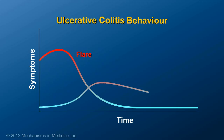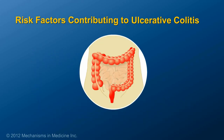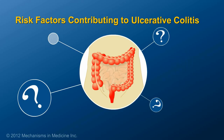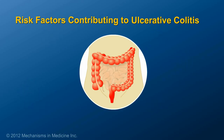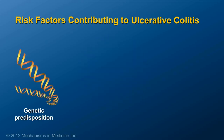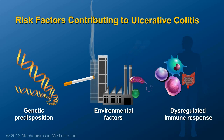Some patients with ulcerative colitis have more severe flares than others. Although the cause of ulcerative colitis is not known, many factors can contribute to a person's risk of having ulcerative colitis, but most can be thought of in three categories: genetic predisposition, environmental factors, and a dysregulated immune response in the GI tract, which causes the inflammation.